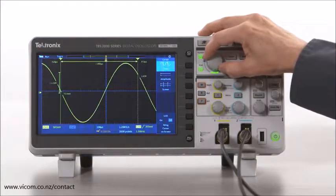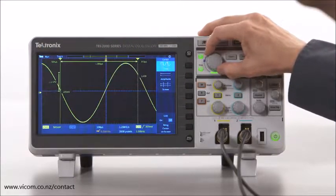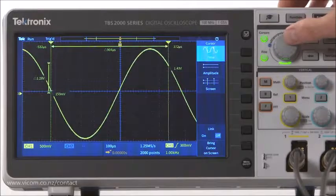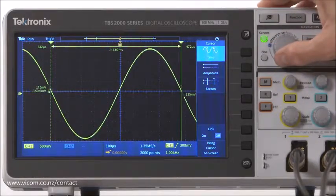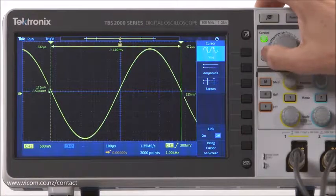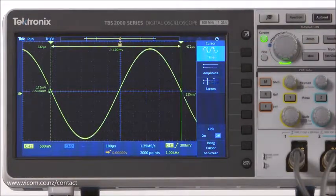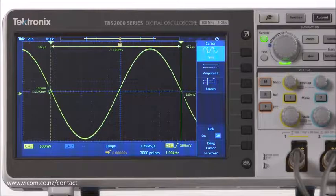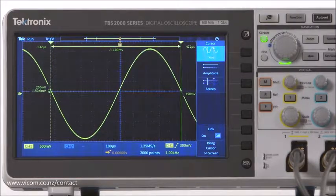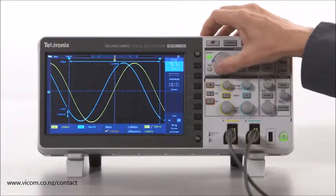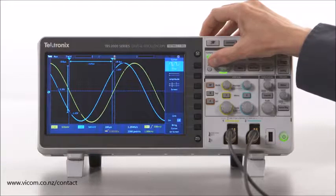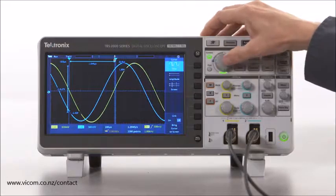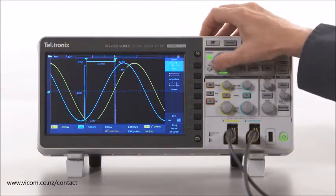Now let's use the cursors to measure the period of the signal. Pressing the multi-purpose knob toggles the selection between cursors. For the period measurement, we'll position the cursors on exactly one cycle of the waveform. The time difference between the cursors then indicates the period of the signal. Time cursors can also be used to calculate the time difference between two channels by aligning the cursors on the zero crossings of the same edge on the two channels.